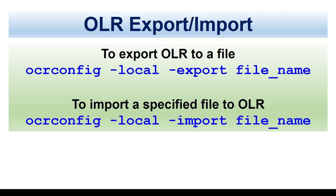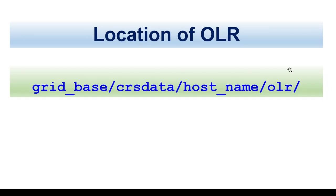If you want to export the OLR to a file, you can use OCR config local export with the file name specified. If you want to import it, you can use OCR config local import with the file name and location of your choice. The OLR location is in the grid base at CRS/data/hostname/OLR — you have to replace the hostname, and under that you will find the local OLR.